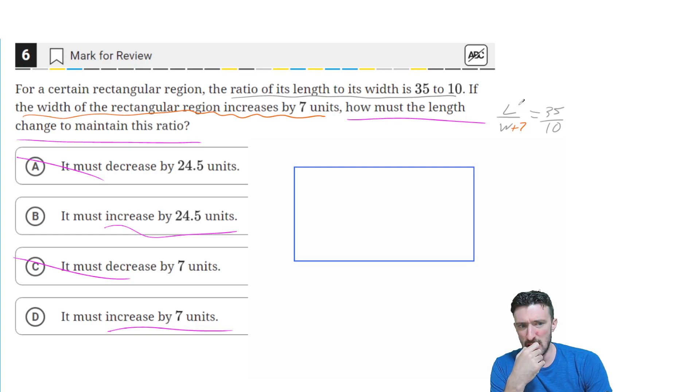So instead, I guess it's going to have to be the only other number they gave me. So it's going to have to increase by 24.5.